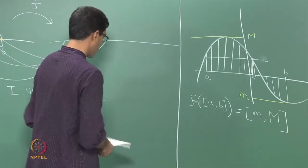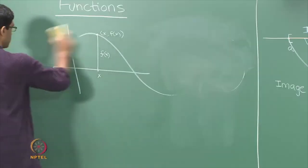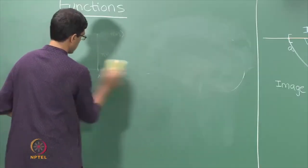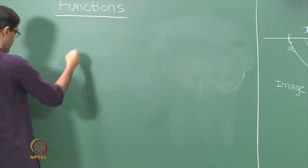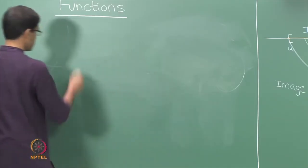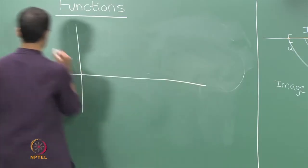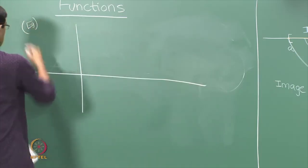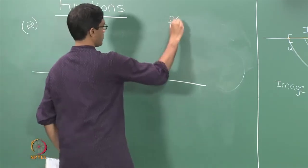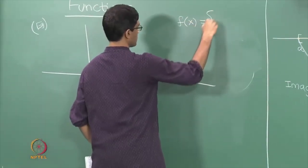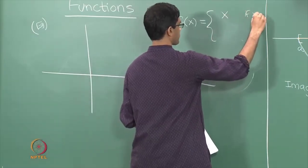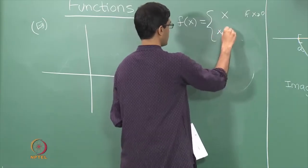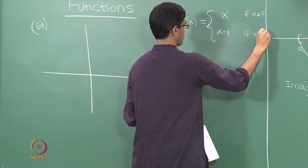What is the key property of the function f which makes this true? Here is an example of a function for which this may not be true. For the graph that I drew it happens to be correct. Let us take another example: a piecewise defined function f(x) equals x if x is positive, and x minus 1 if x is negative.